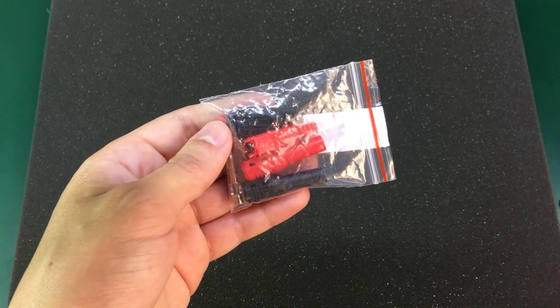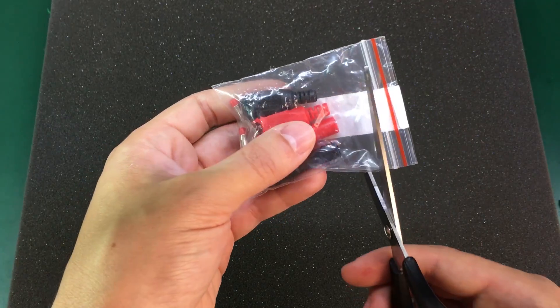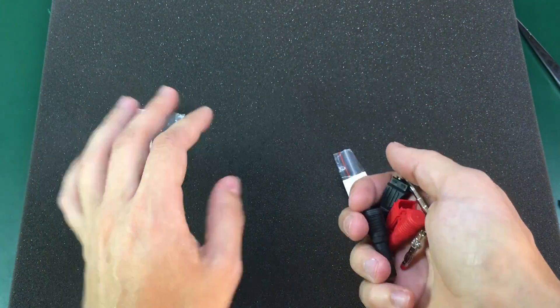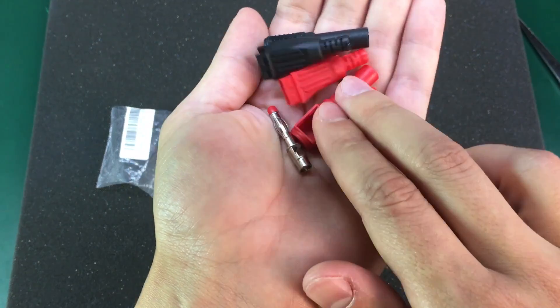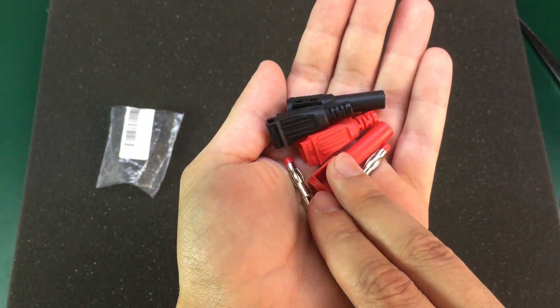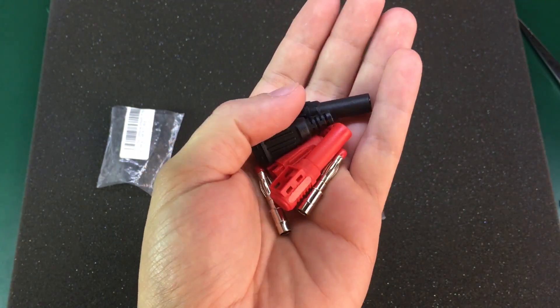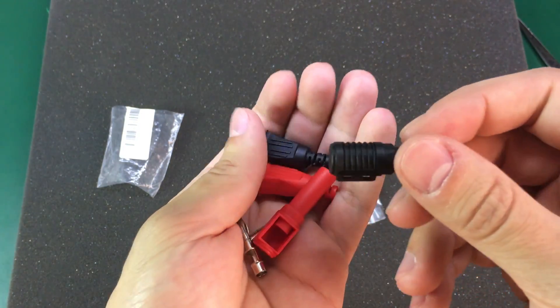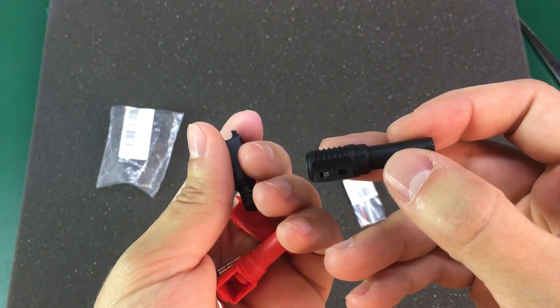I also got a pair of these shrouded 4mm banana plugs. These are a bit more complicated and more expensive. I think I paid for a pair of these as much as I paid for 10 pieces of the classic type. But they have the advantage of being shrouded.